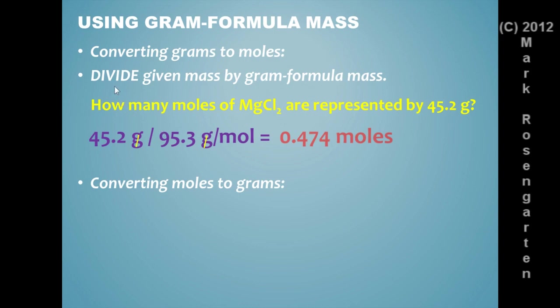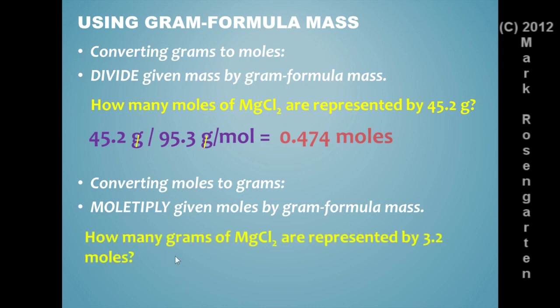And we can convert moles to grams using the same conversion factor. Except in this case, instead of dividing, if we start with moles, you multiply the given moles by gram formula mass. So how many grams of magnesium chloride are represented by 3.2 moles? Well, we take those 3.2 moles and we're going to multiply them by the formula mass. And when we multiply that through, the moles will cancel out and give us 300 grams. Notice we have two sig figs here, three sig figs here. So we're going to have two sig figs in our final answer.